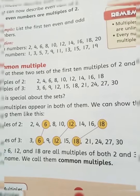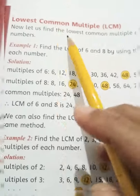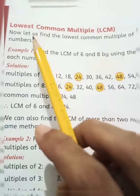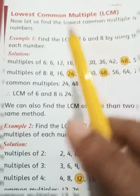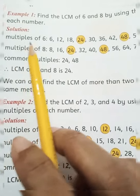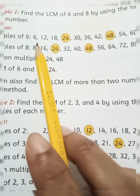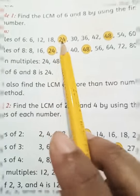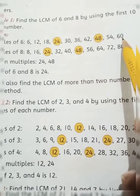Now come to page number 42. On page number 42, the heading is LCM — Lowest Common Multiple. We have written multiples of six: 6, 12, 18, 24, 30, 36, 42, 48, 54, 60.